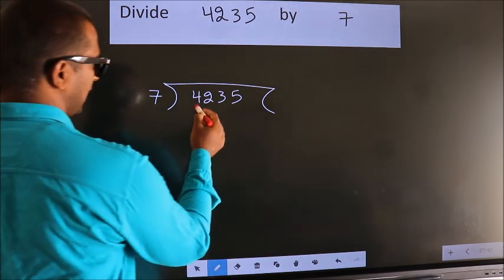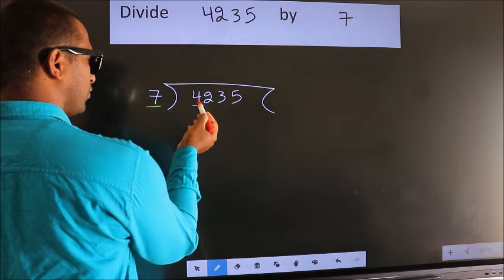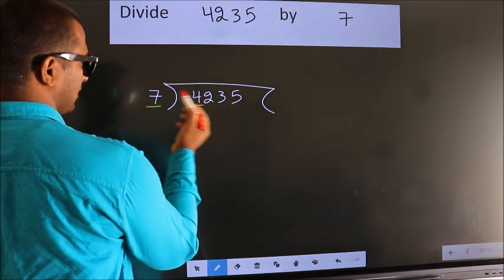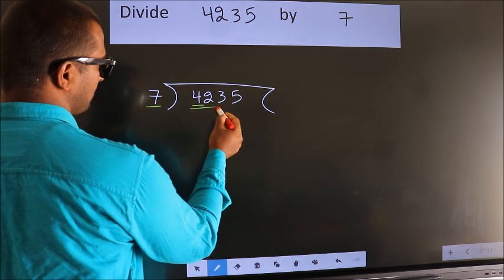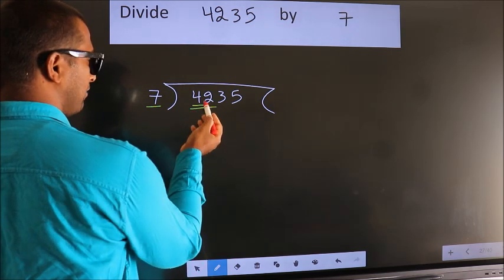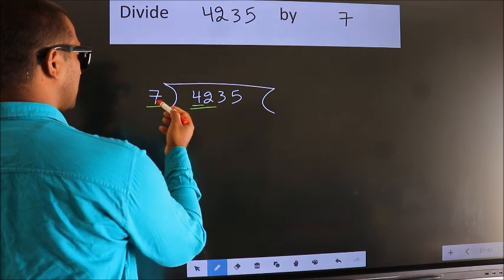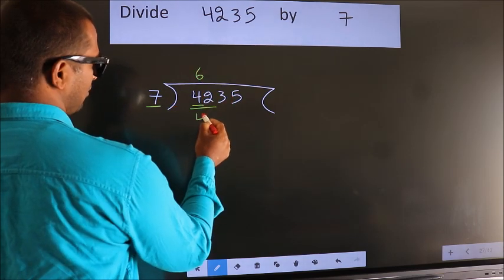Here we have 4. Here 7. 4 is smaller than 7, so we should take 2 numbers, 42. When do we get 42 in the 7 table? 7 times 6 is 42.